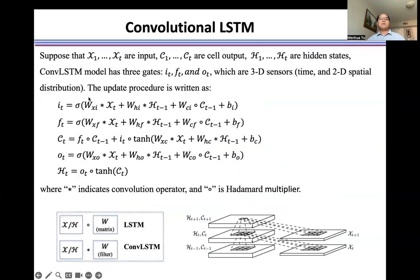In that case, for example, the input is X, C is a cell output, H is a hidden state. So the convolutional LSTM, we have the same three gates as a regular LSTM. But right now, the gate is a 3D tensor. First one is a time, and the next two is a spatial distribution.